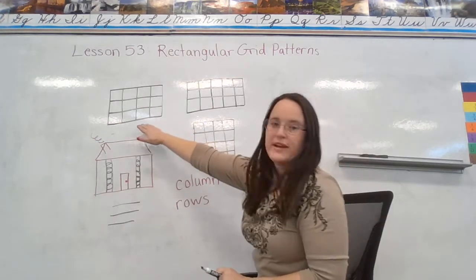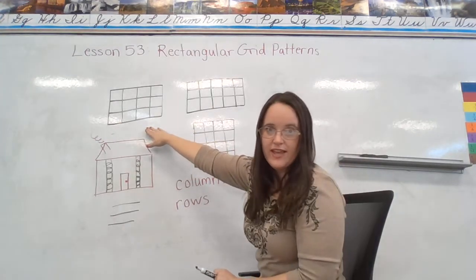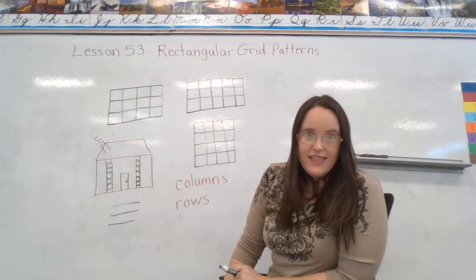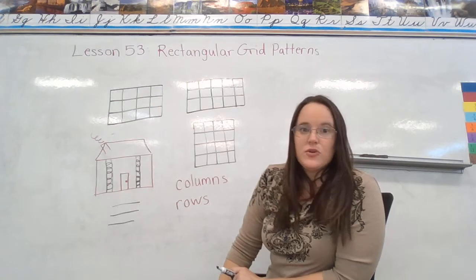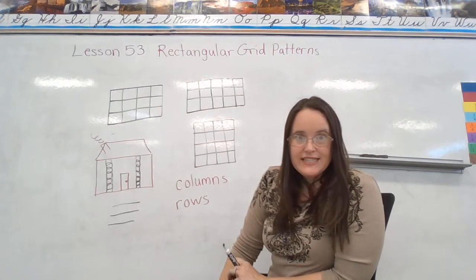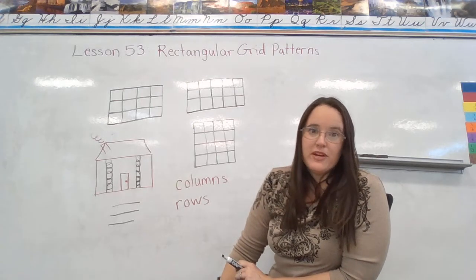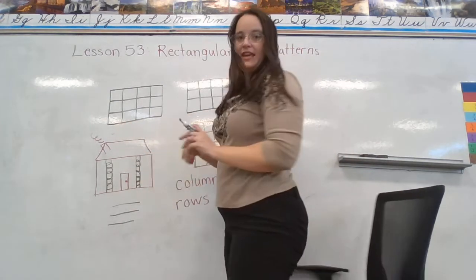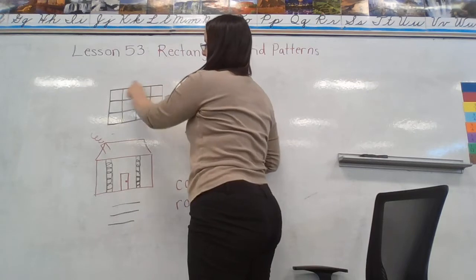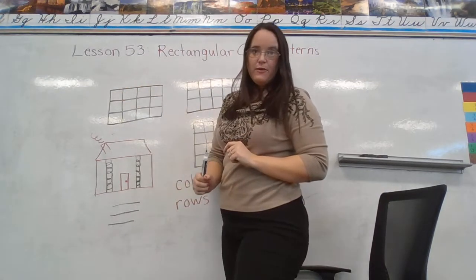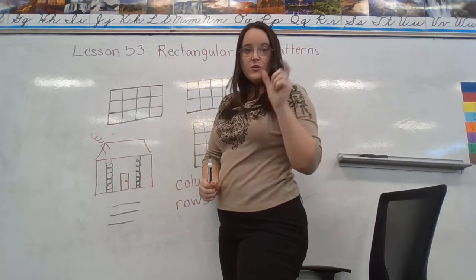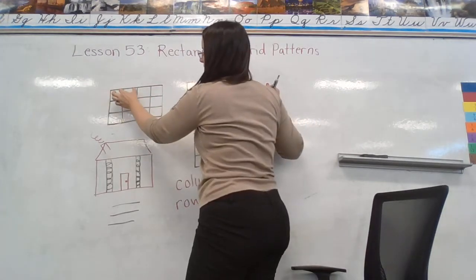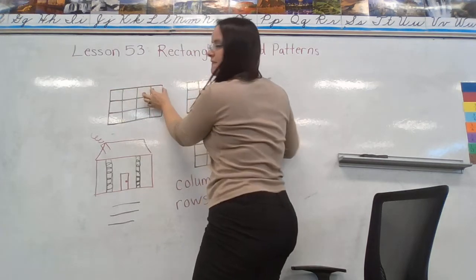So for our first example, we're actually going to look at this grid right here. And the question says, what is the length and what is the width? Keep in mind from yesterday's lesson, length is referring to the longer side of the rectangle. So this one right here has a length of how many units? We're counting squares or blocks. So we've got one, two, three, four.